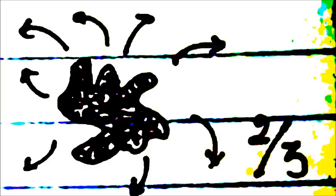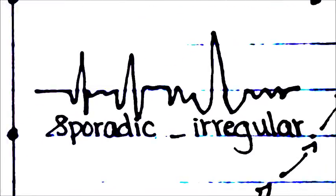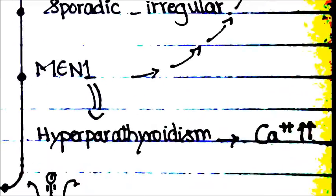Usually gastrinomas are sporadic—75% of them are occasional. However, gastrinomas can also be associated with multiple endocrine neoplasia type 1 (MEN1), which accounts for 25-30% of gastrinomas.